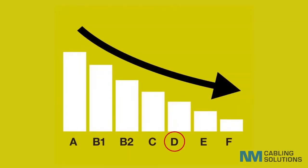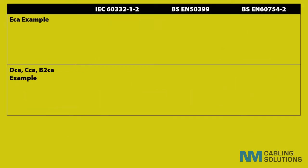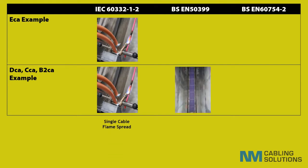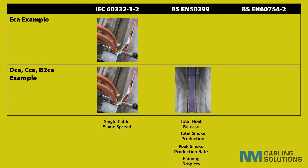For the DCA classification, we must also carry out the BS EN 5399 and BS EN 60754-2 tests. These go much further than the previous bundled cable test employed for the non-discriminatory IEC 60332-3 series, which only ever had recommendations for flame spread limits and employed a 10 kilowatt flame. We now apply a 20.5 kilowatt flame to the test sample for a duration of 20 minutes, during which time we measure the following four parameters using BS EN 5399: total heat release, total smoke production, peak smoke production rate, and flaming droplets.